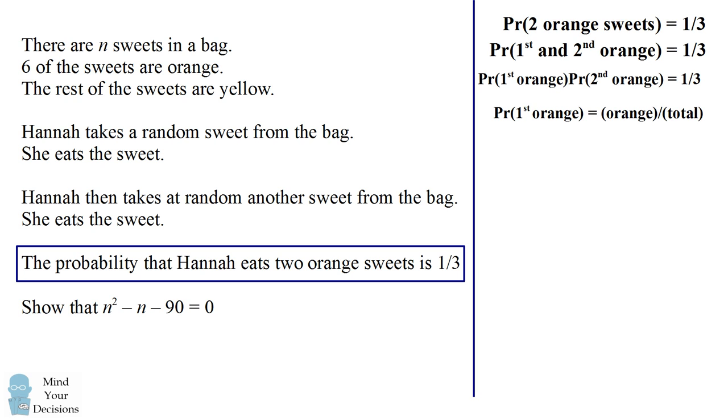This is the number of orange sweets divided by the total number of sweets in the bag. There are six orange sweets and there are n sweets in the bag. We don't know what n is, n is a variable, but the total number equals n. So the probability of drawing the first sweet is 6 divided by n.